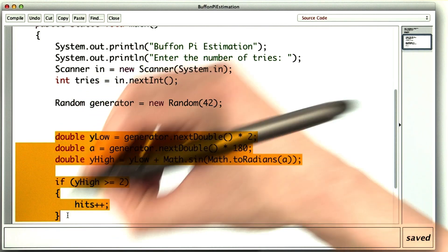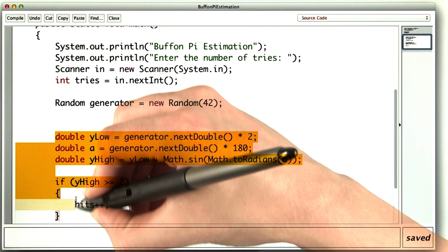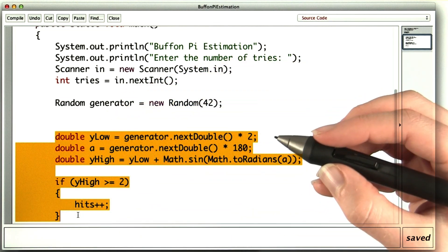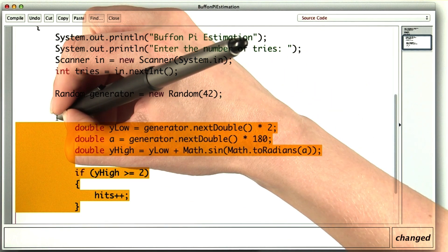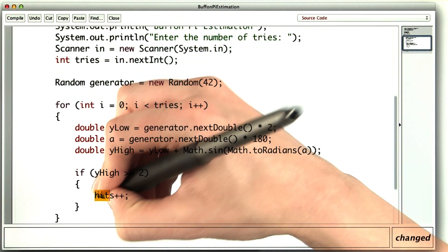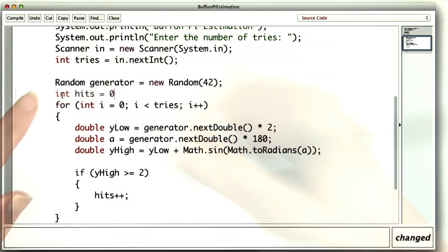But I want to do all of this tries times. So I'll highlight it all, hit tab to indent, and then wrap it in a for loop. And I'll need to actually declare hits, which starts off at 0.